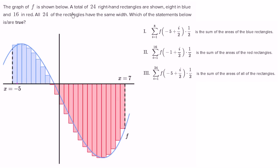The graph of f is shown below. A total of 24 right-hand rectangles are shown. Right-hand rectangle means that for each of these rectangles, the height of the rectangle is defined by the value of the function on the right-hand side of the rectangle. You can see this is the right-hand side of the first rectangle, and the value of the function at that point is the height. A left-hand rectangle would define the height by the value of the function at the left-hand side.